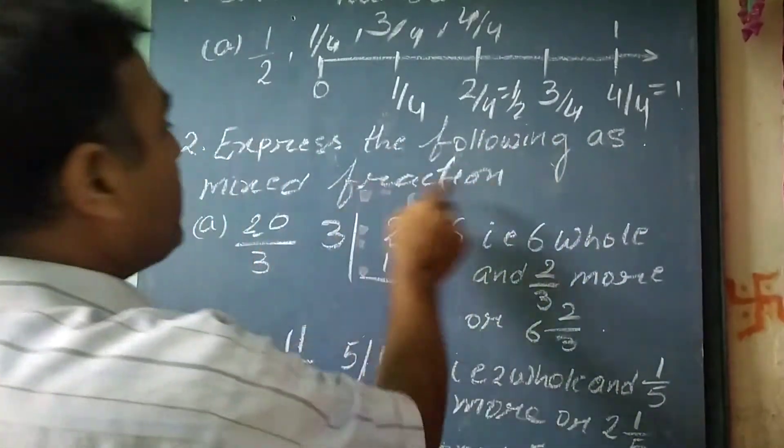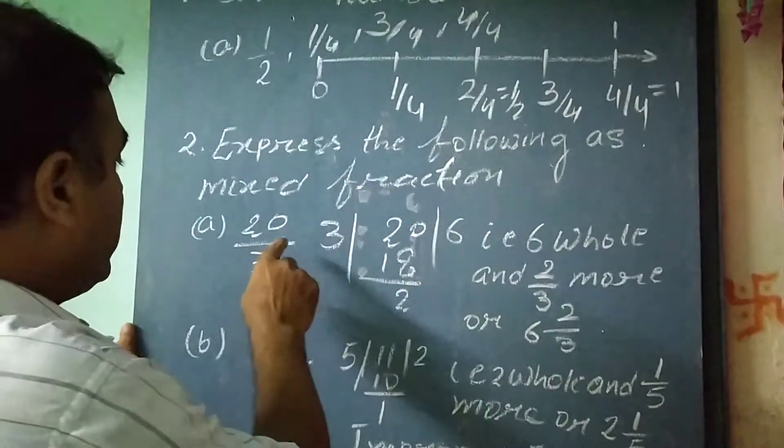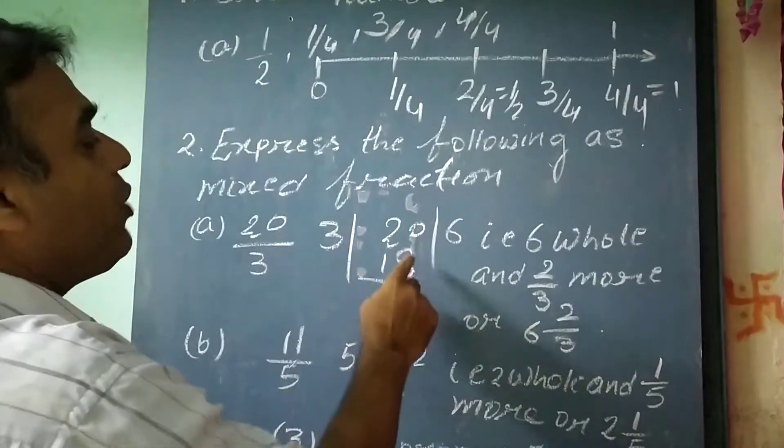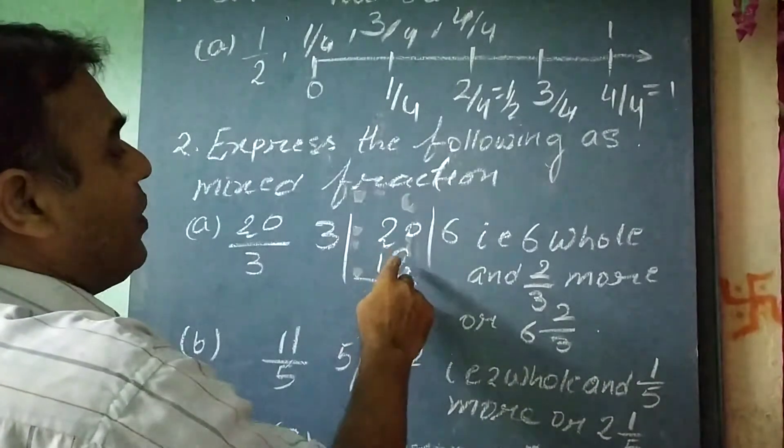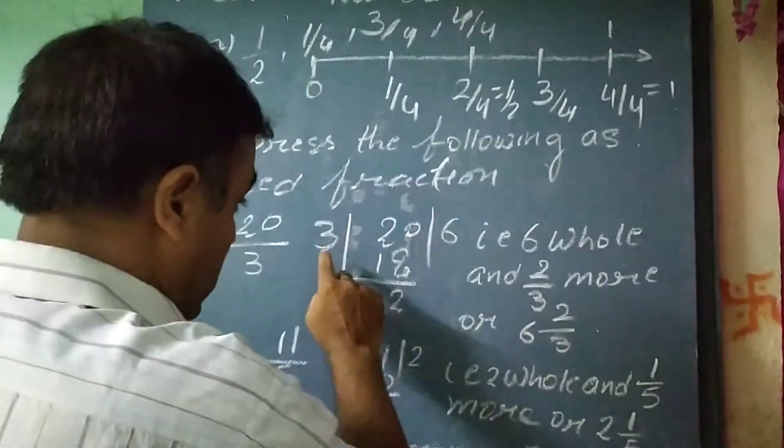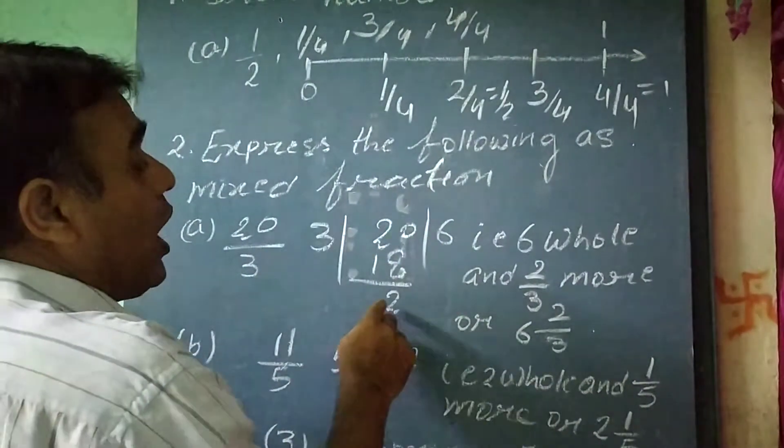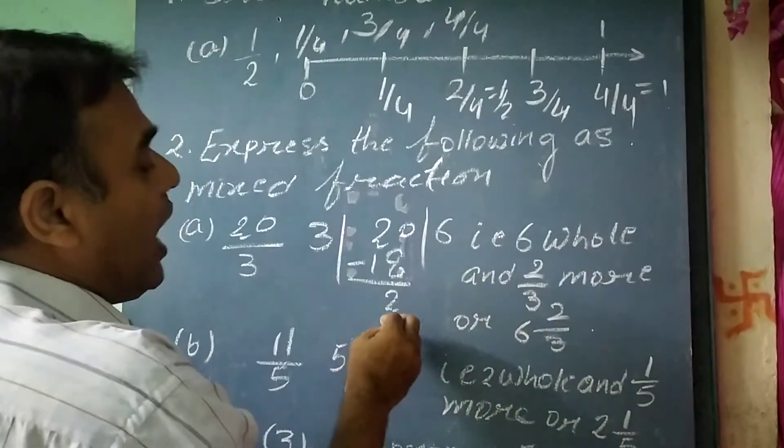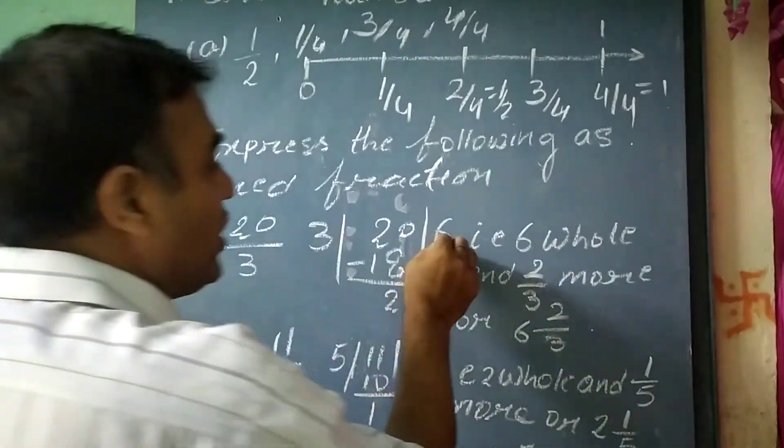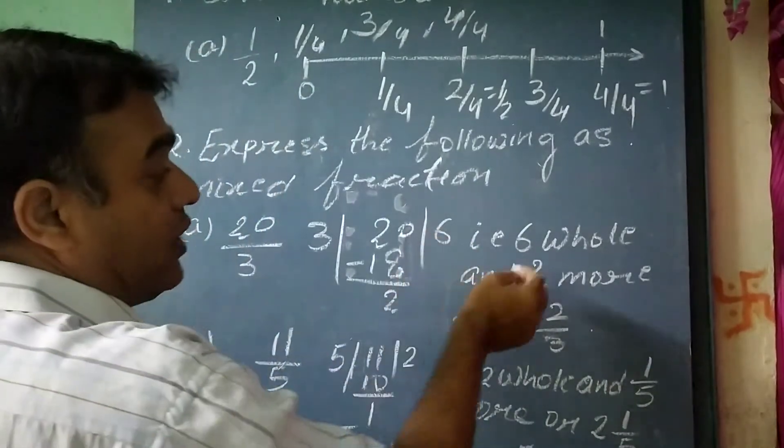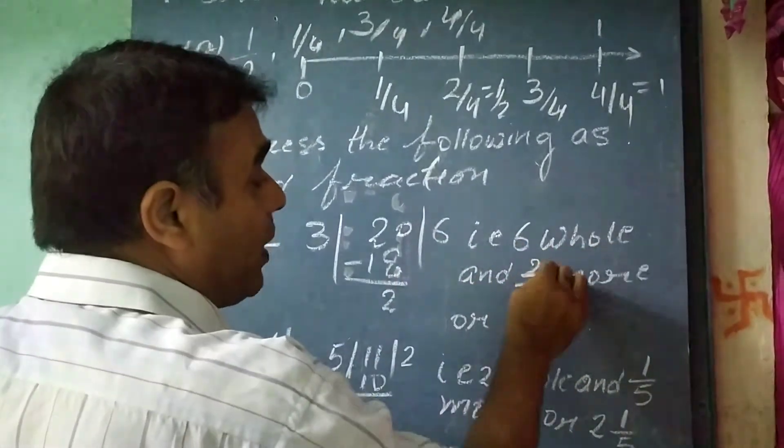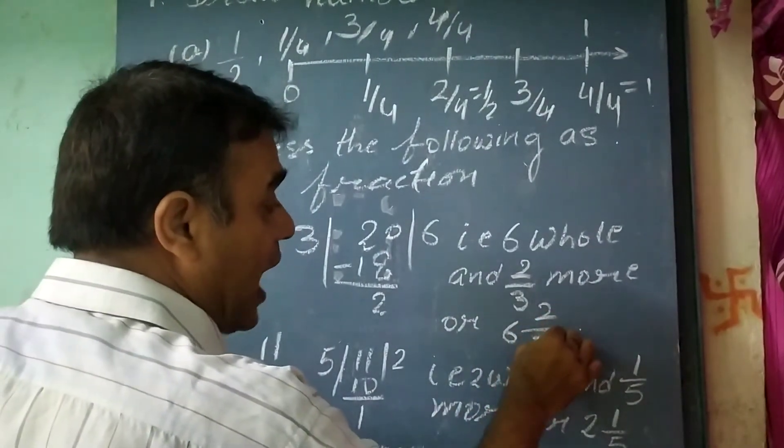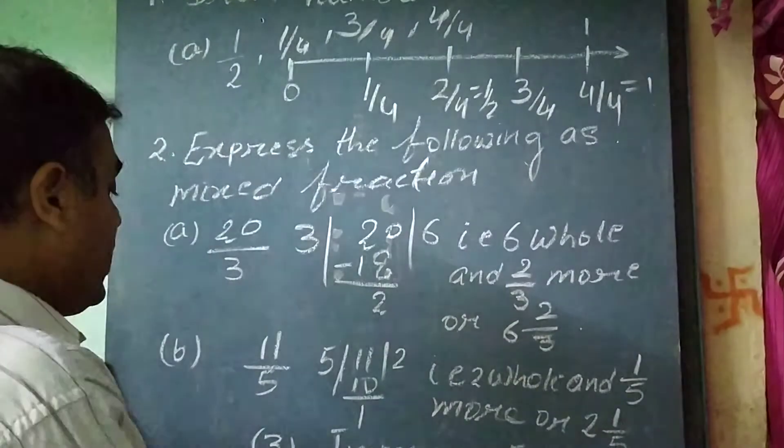We will divide 20 by 3. When we divide 20 by 3, we get 6. 6 times 3 is 18, and we subtract 18 from 20, and we get 2. So, 6 as the whole number and 2/3 more. We can write this as the mixed fraction 6 2/3.